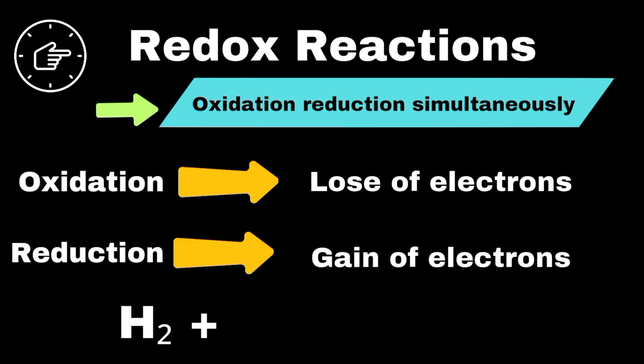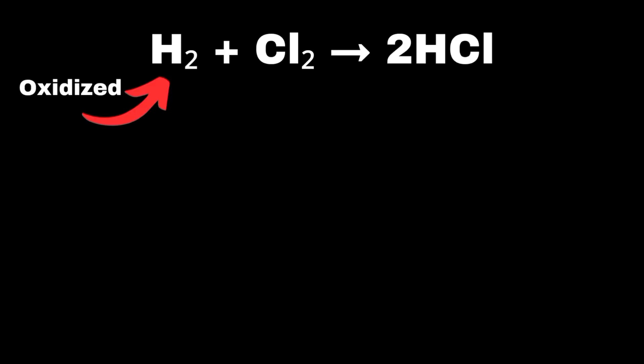For example, in the reaction between hydrogen and chlorine to form hydrogen chloride, hydrogen is oxidized because it gains oxygen, and chlorine is reduced because it gains electrons.